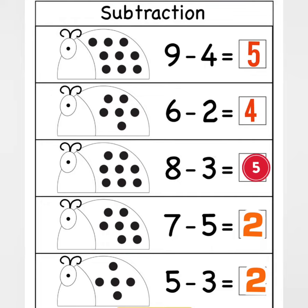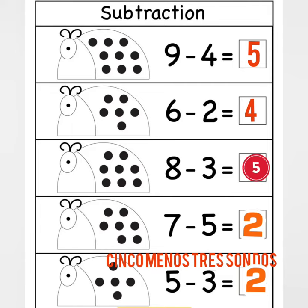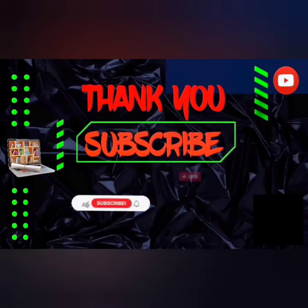And for the last one, five minus three equals two. So you're going to say: cinco menos tres son dos.